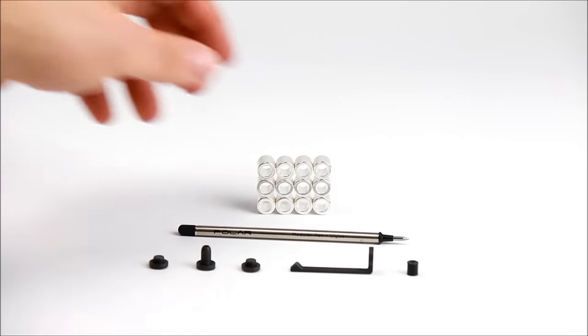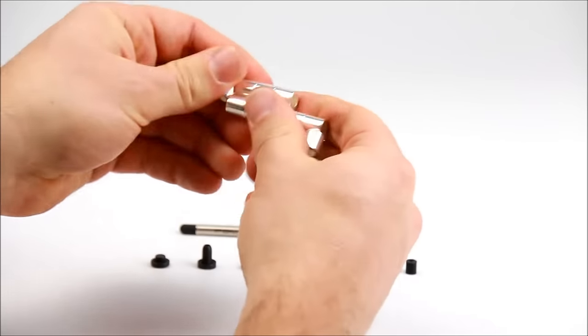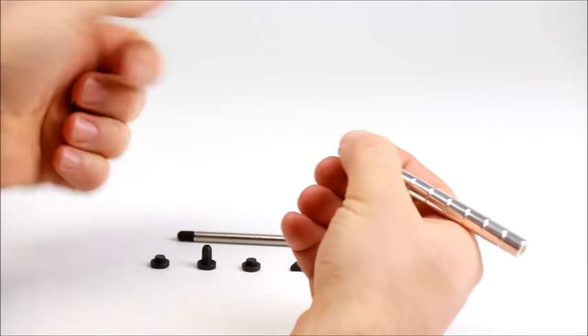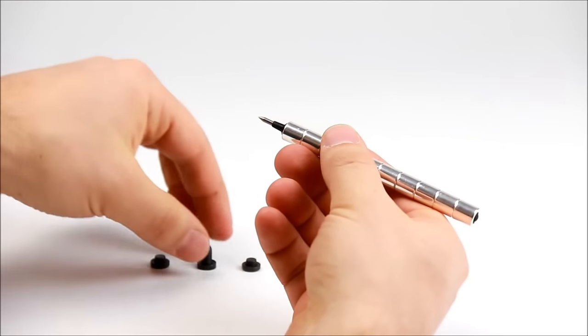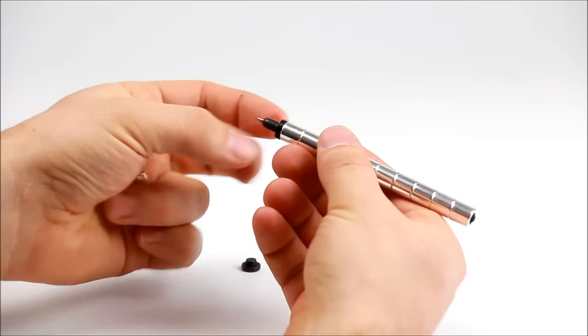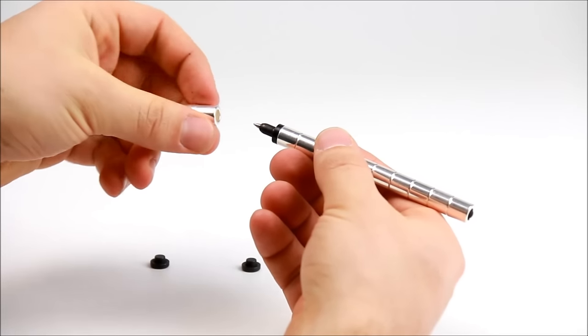Here's how you assemble the Polar Pen. Pull two magnets off one end and insert the refill. Add the tip on to lock it in, and then pop two magnets on the end.